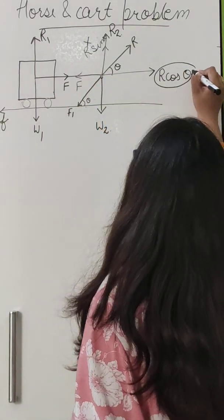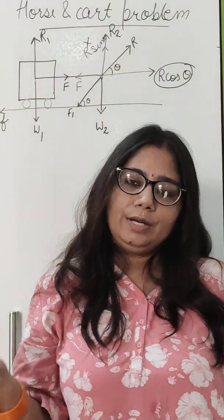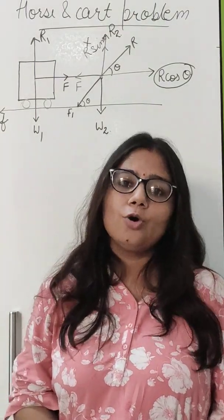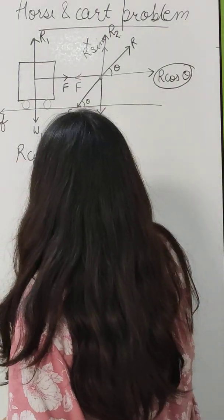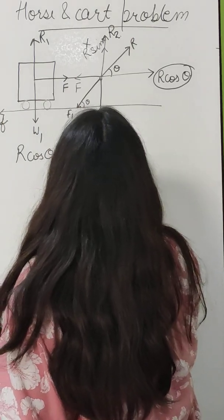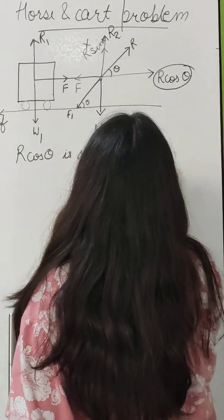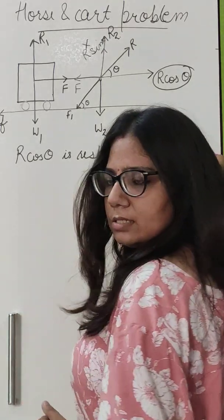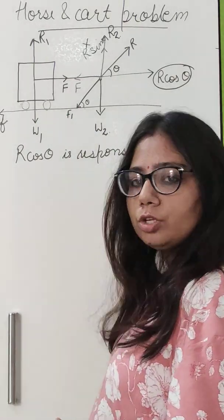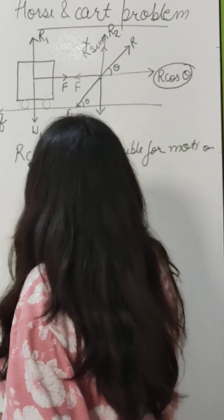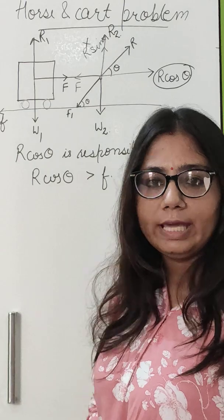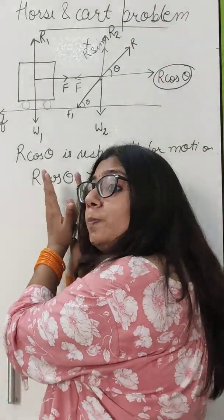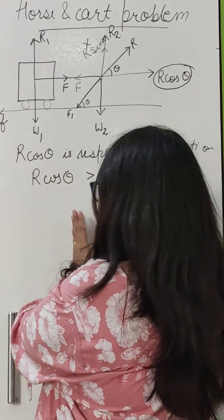The remaining force is R cos theta. R cos theta is responsible for the motion of the horse and cart. There is a certain condition for R cos theta to cause motion: R cos theta should be greater than the frictional force. The component R cos theta should be greater than frictional force.